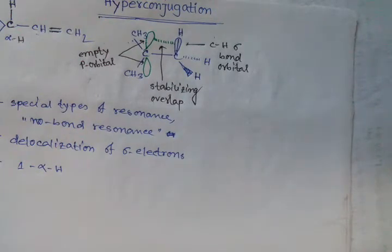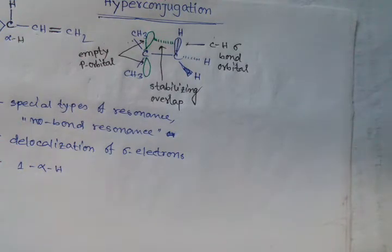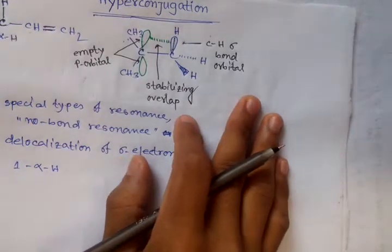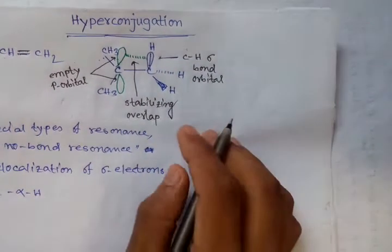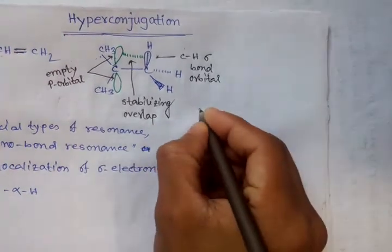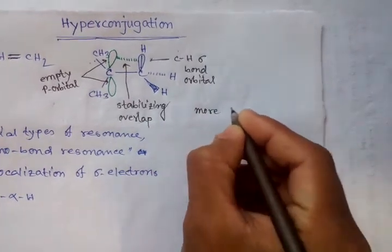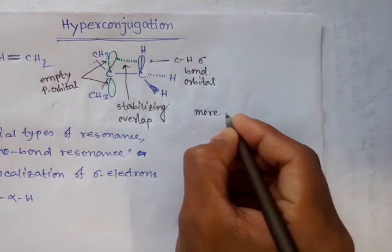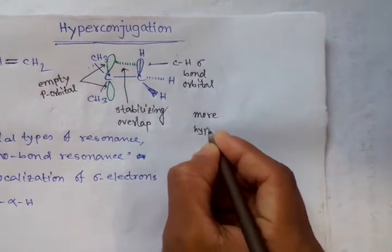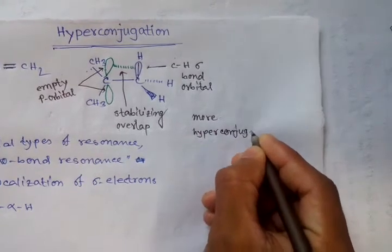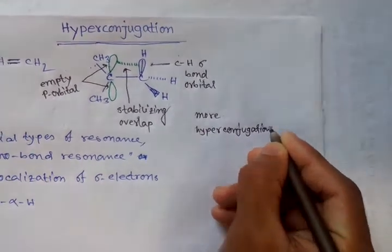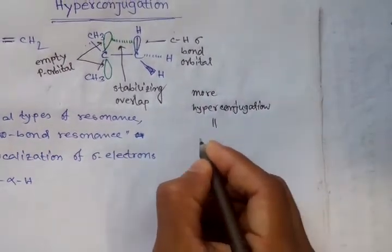Hyperconjugation is a technique to determine the stability of a molecule. More number of hyperconjugations means the molecule will be more stable.